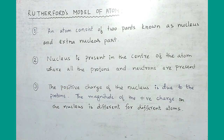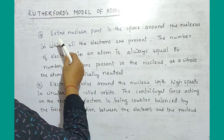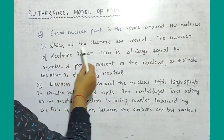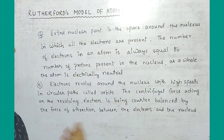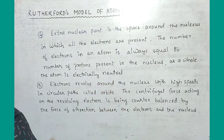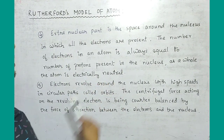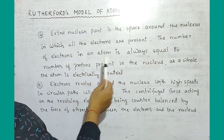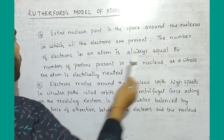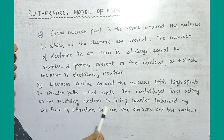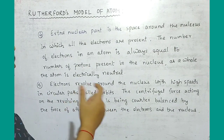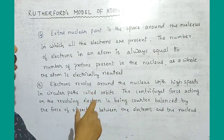Point 4: The extra-nuclear part is the space around the nucleus in which all the electrons are present. Point 5: The number of electrons in an atom is always equal to the number of protons present in the nucleus.